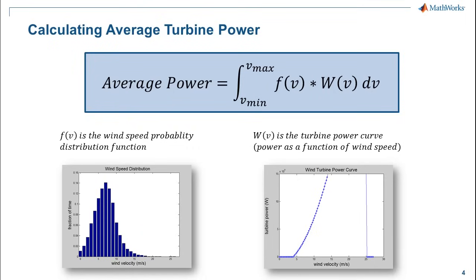The way they calculate average power production is based on a formula essentially derived from two quantities: the wind speed probability distribution, which we can get from the measurements, and the turbine power curve, which characterizes the wind turbine they're going to build. They multiply these and integrate over it to calculate the average power. We'll come back to this slide when we get to that section of the example, so keep this idea in the back of your head as we go through.